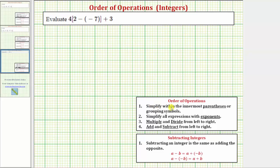Step one, we simplify within the innermost parentheses or grouping symbols. So looking at our expression, these brackets are grouping symbols, and therefore the first step is to simplify inside these brackets.